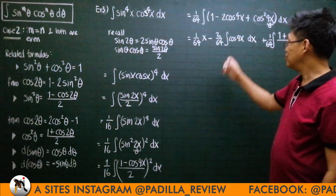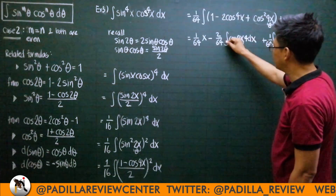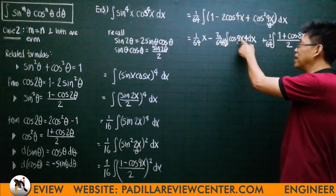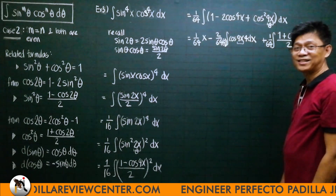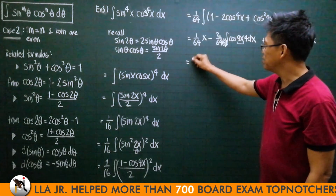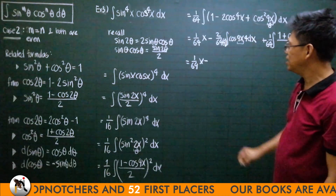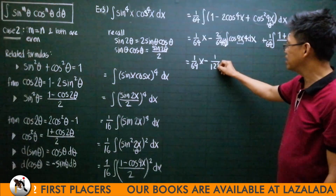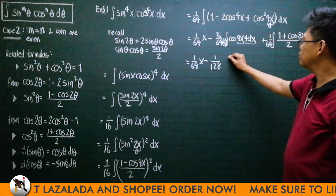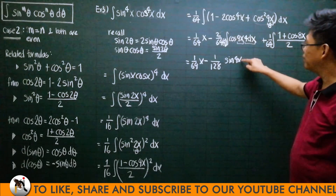Since ∫cos(4x) dx requires multiplying by 4 dx, we adjust accordingly. Using ∫cos(mx) dx = sin(mx)/m with m = 4, we get sin(4x)/4. So we have 1/64 · [x − (2/4)·sin(4x)] = 1/64 · x − 1/128 · sin(4x). Then for the cos(4x) portion multiplied by 4 dx, that gives sin(4x).